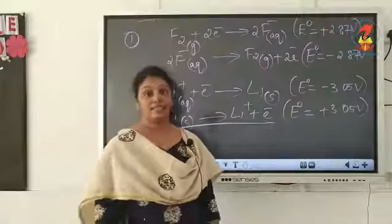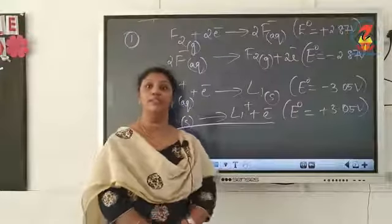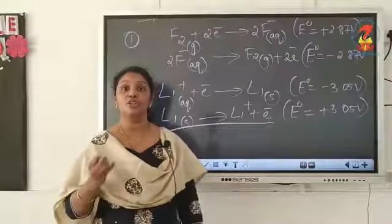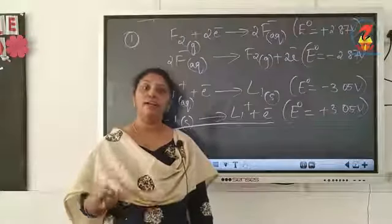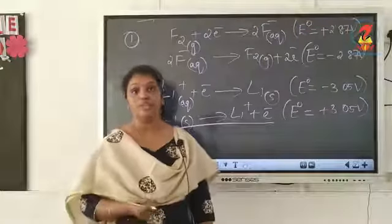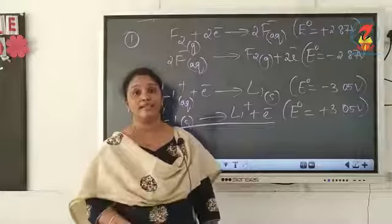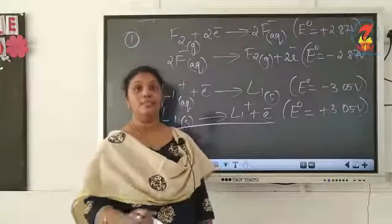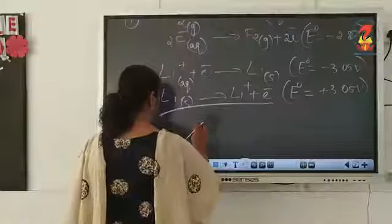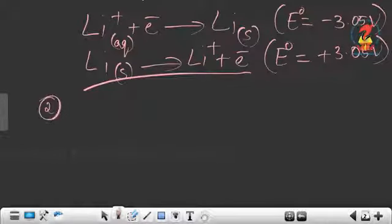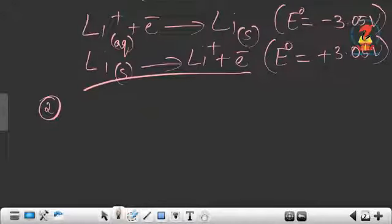To summarize the first application: fluorine gas is the strongest oxidizing agent; lithium metal is the strongest reducing agent; fluoride ion is the weakest reducing agent; and lithium ion is the weakest oxidizing agent. The second application: a metal with more negative E° value can displace other metals from their salt solutions. For example, E°(Zn²⁺/Zn) = −0.76 V and E°(Cu²⁺/Cu) = +0.34 V.